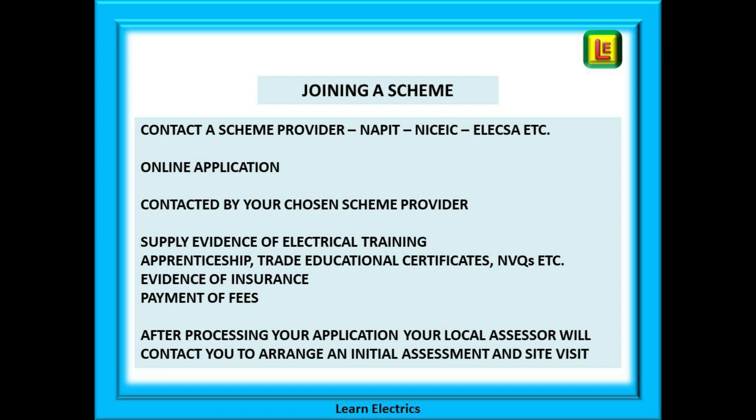After processing by the office, your details will be passed to your local field officer, who will contact you for a friendly chat. They will discuss your application and arrange a visit for your initial assessment. During this call the assessor will want to discuss the job that you are going to show them as evidence of your competence.